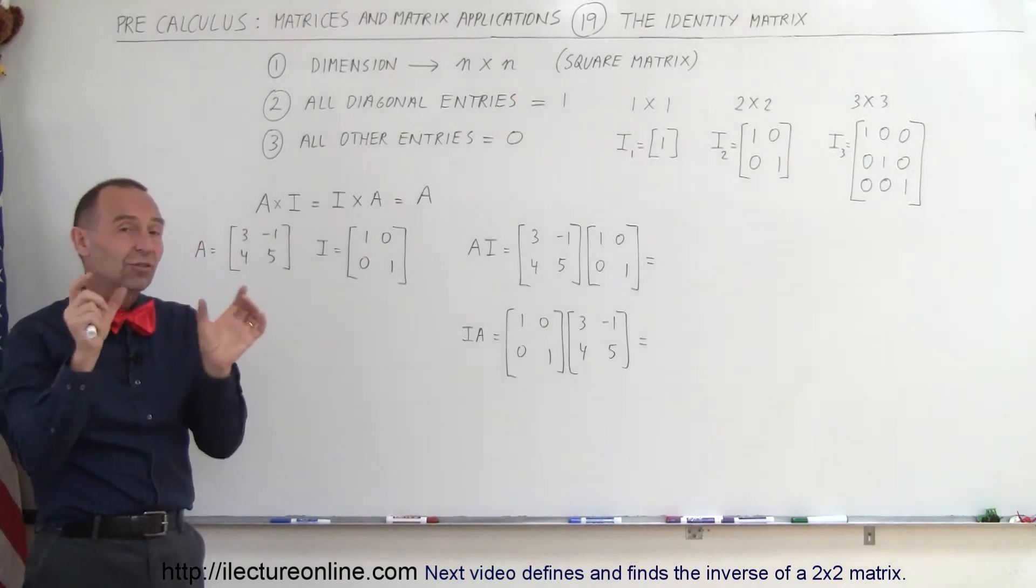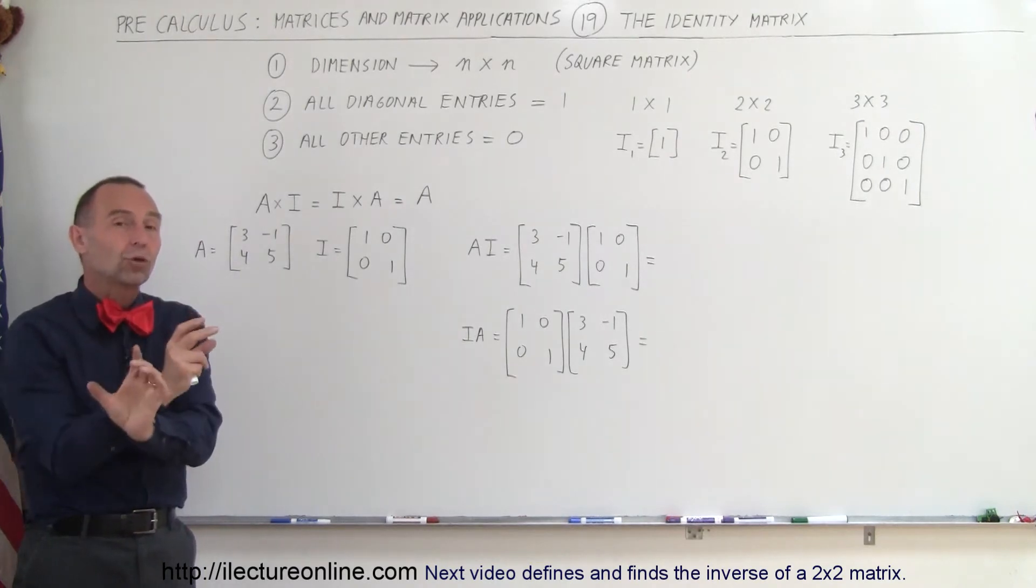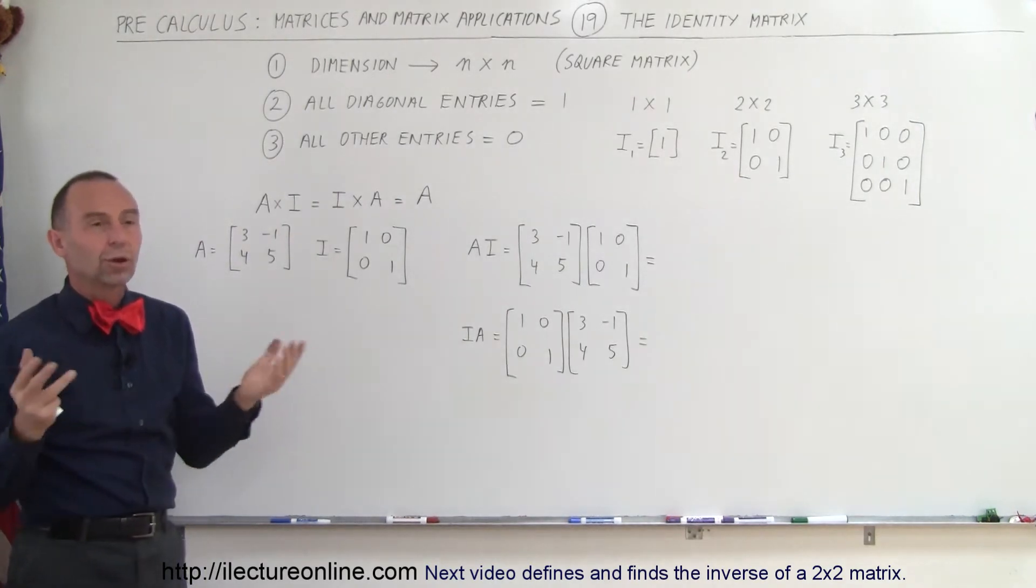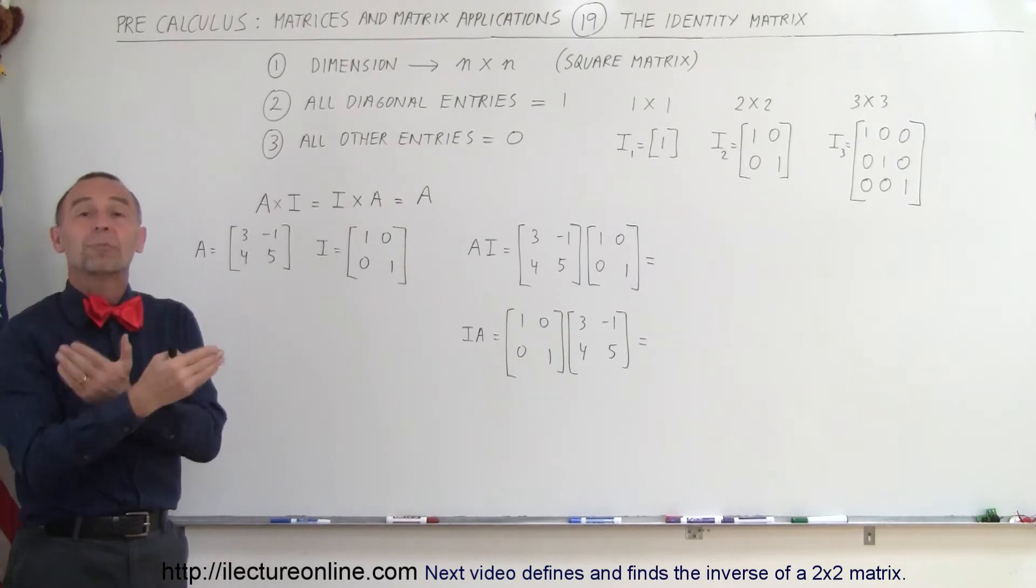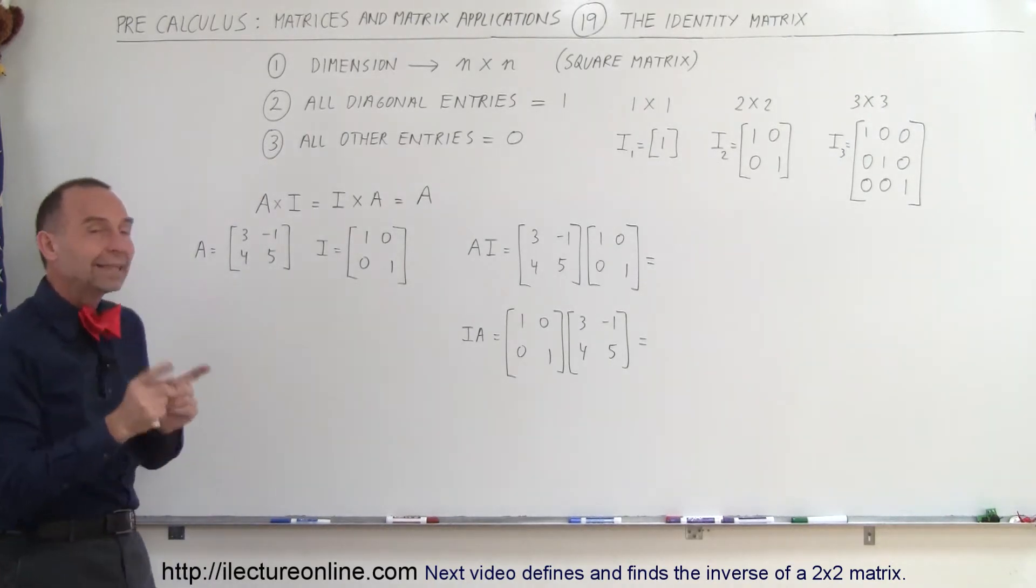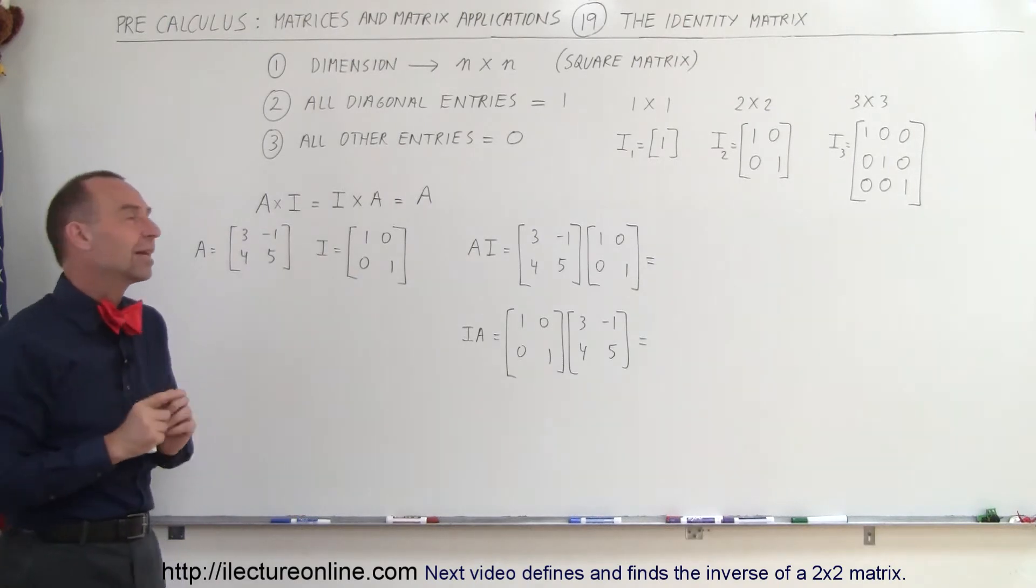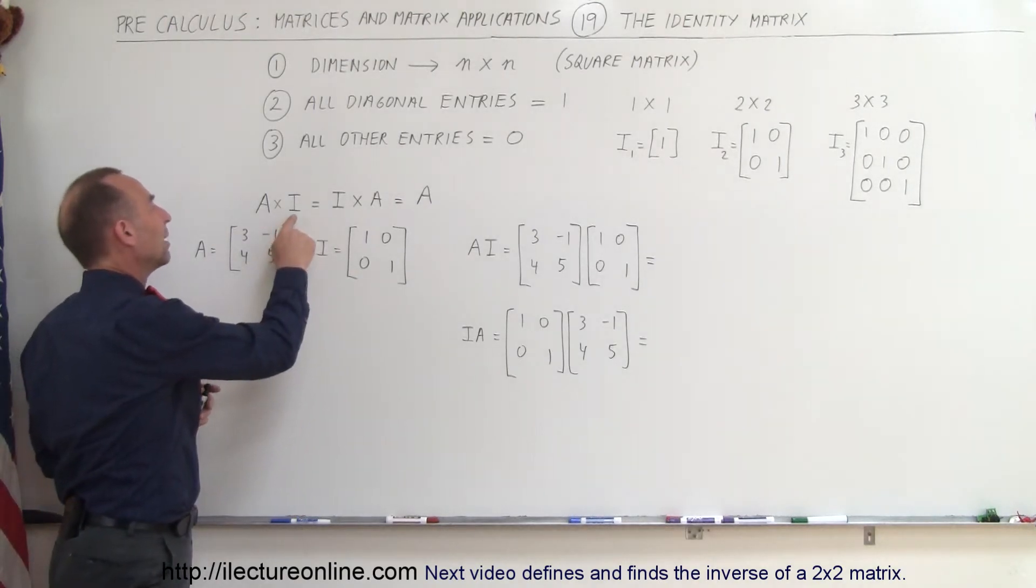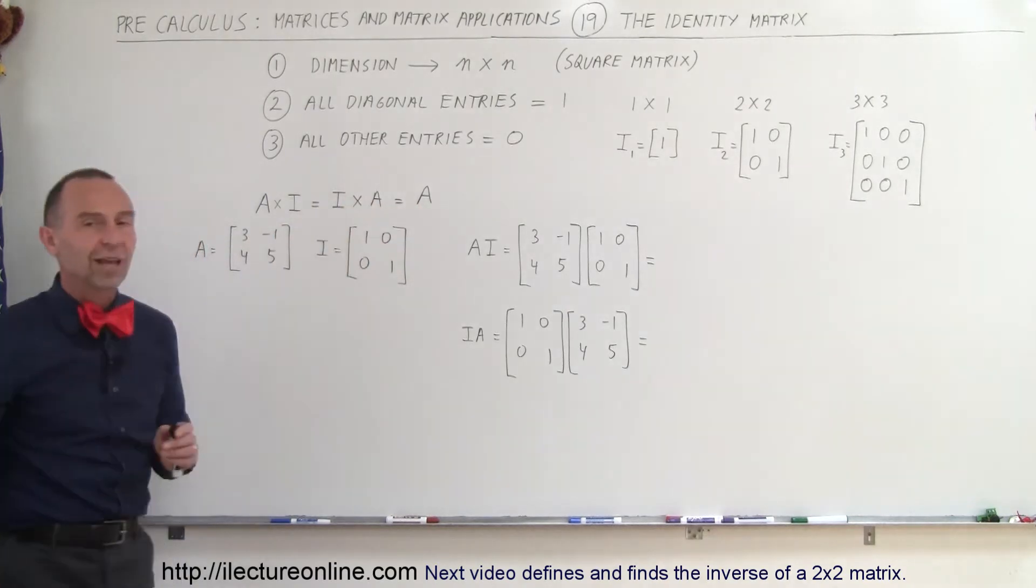Normally, any two matrices multiplied together, when you reverse the order, you will get a different result. In other words, it does not have the commutative property. You can't move them around and expect to get the same result. But with the identity matrix, that is indeed the case. You can put the identity matrix last, or you can put it first in the multiplication, and you'll get the very same result.